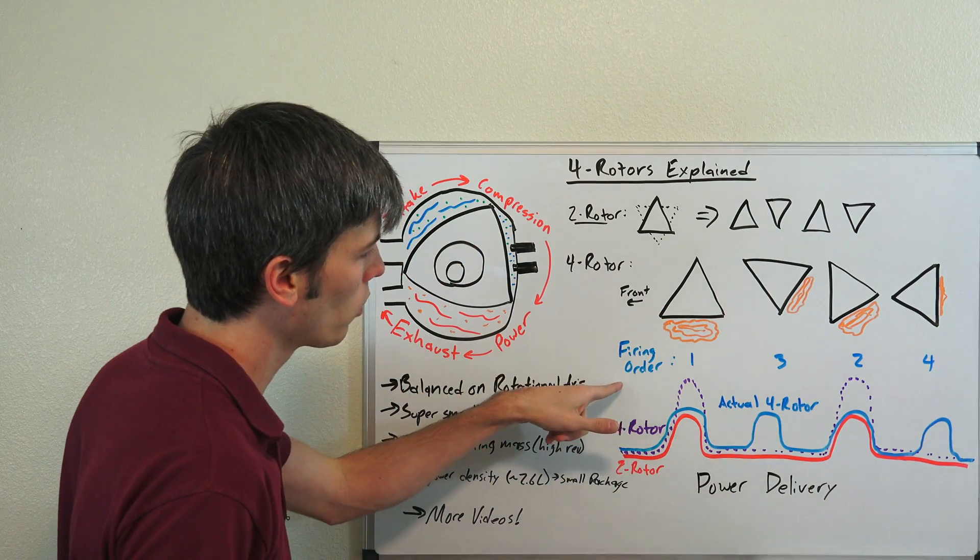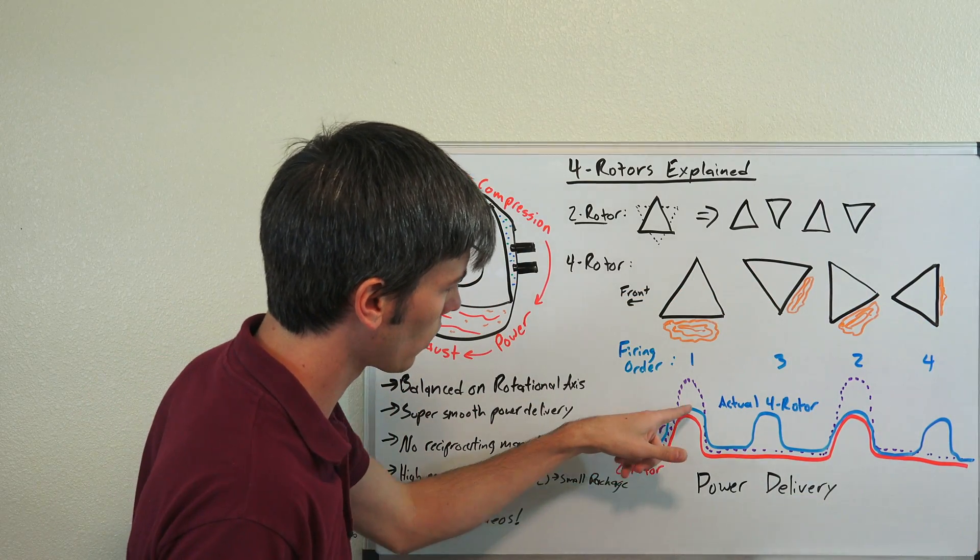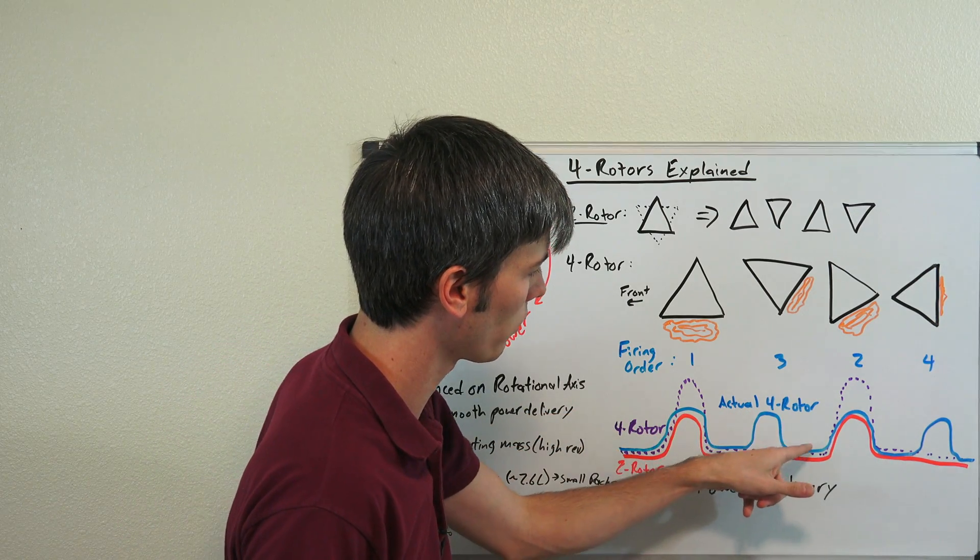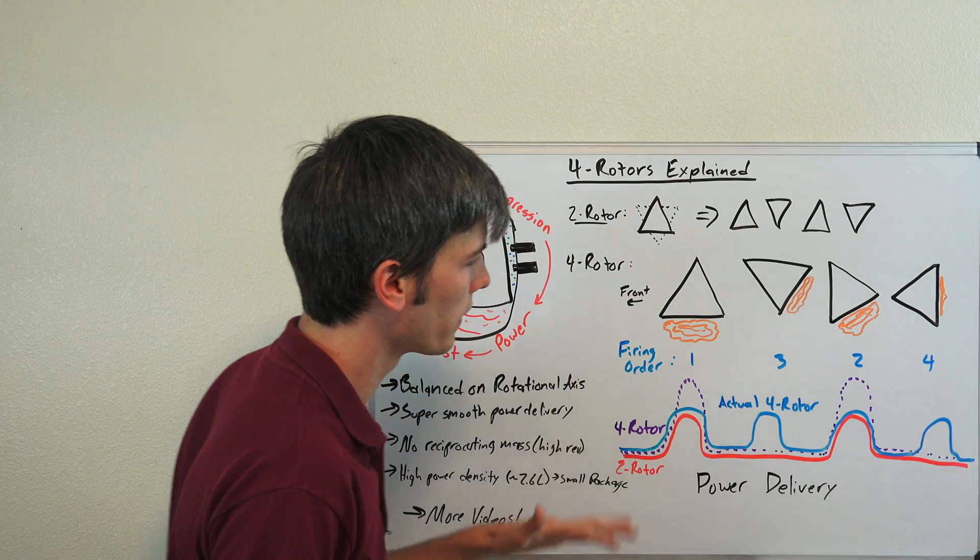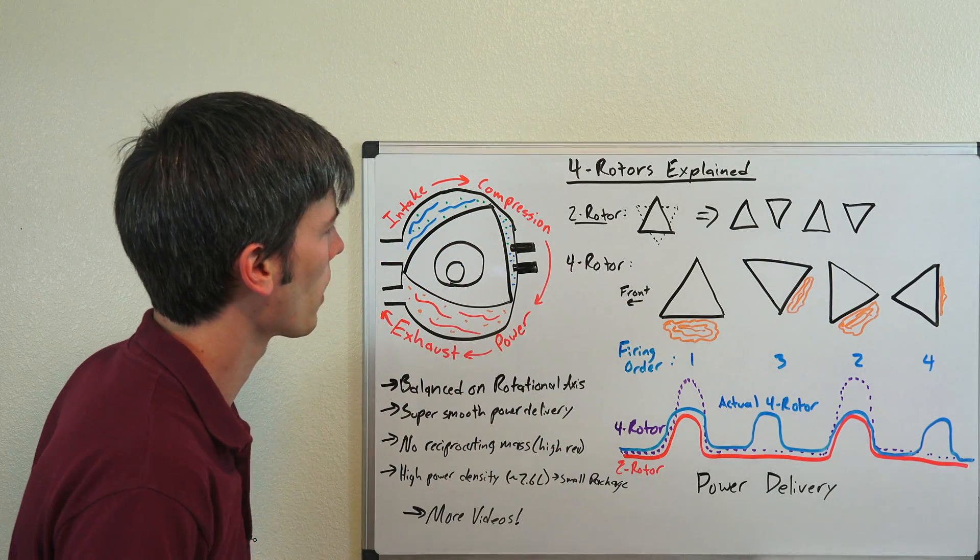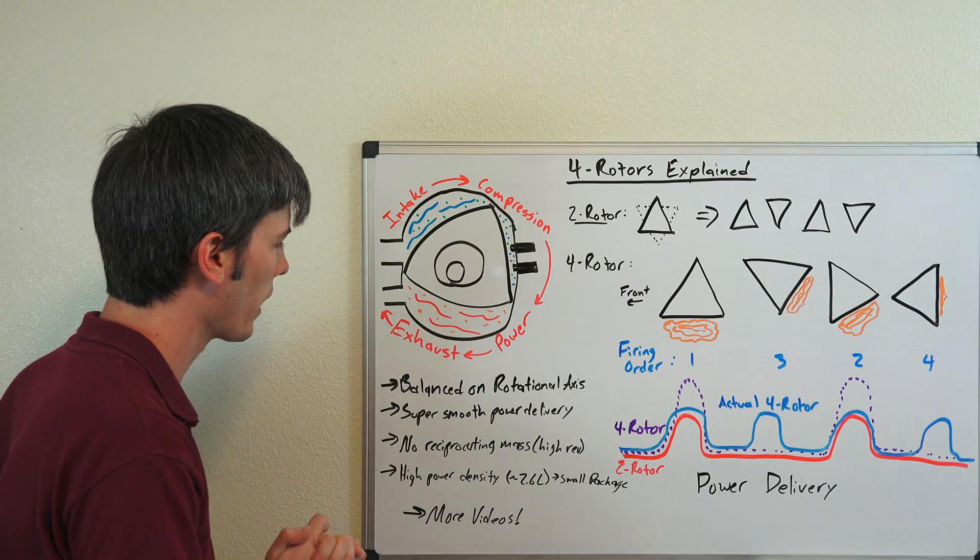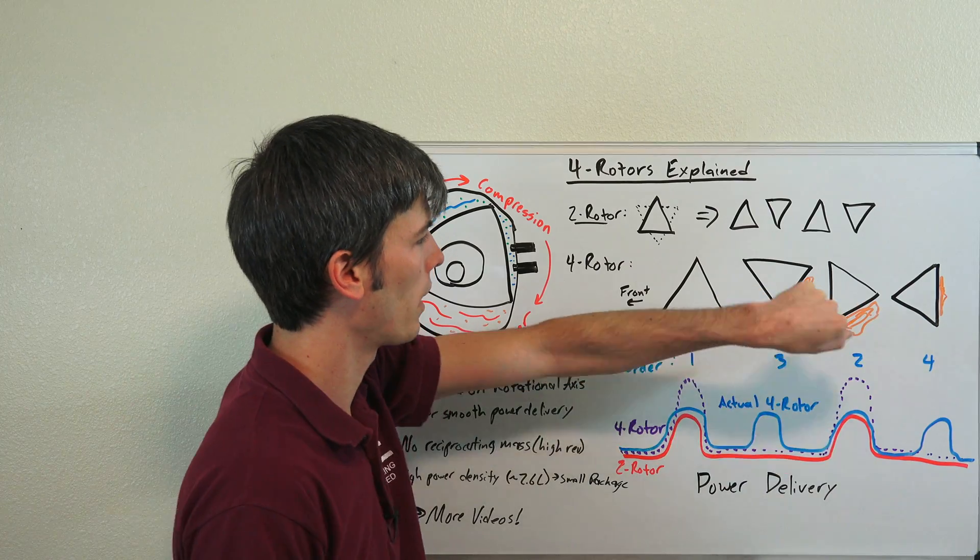So what you do when you switch it to this up down and then side to side is, this is going to look like this. So here in blue is what your actual four rotor power delivery is going to look like. And so it's going to be a much smoother power delivery and that's what you want. That's what you'll do in all piston cylinder engines and the same logic applies here for rotary engines. So just some of the advantages of using a rotary engine. Like we've mentioned, if you stack these up on top of each other, it's balanced rotationally and you also have extremely smooth power delivery.